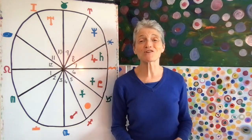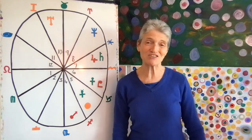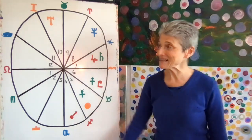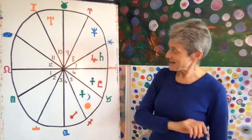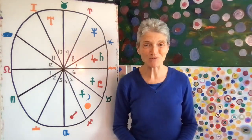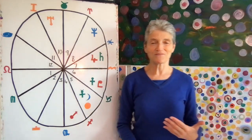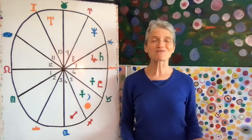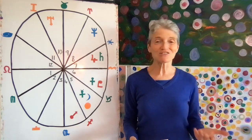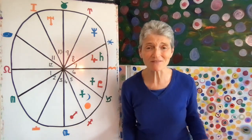The month starts on the 4th with a blast of energy, with a solar eclipse happening in your 5th house, joined by the Sun and Mercury. Remember that the energies of an eclipse can last for a good six months afterwards.